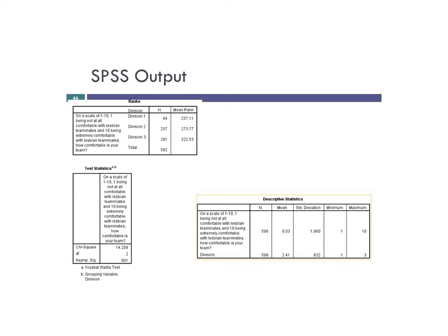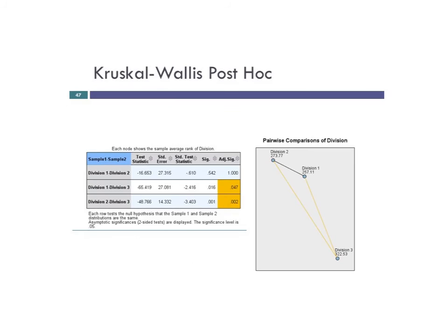Now let's look at the second dependent variable — level of comfort with lesbian teammates on a scale of 1 to 10, with 1 being not at all comfortable and 10 being extremely comfortable. We have the same breakup in n, with a few fewer participants. We can see that now there are bigger mean rank differences — Division 3's number is much higher than Division 1. And it turns out that is statistically significant, with chi-square as the test statistic and p less than 0.01. I will show you the post-hoc that will display those differences more clearly.